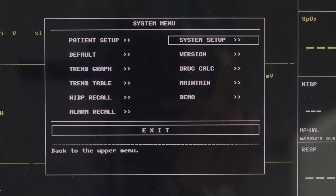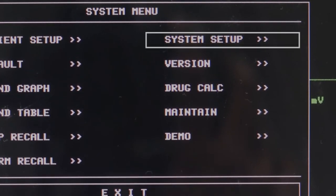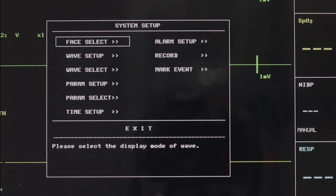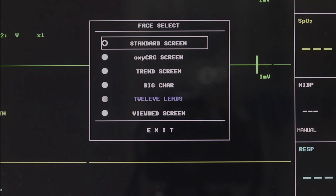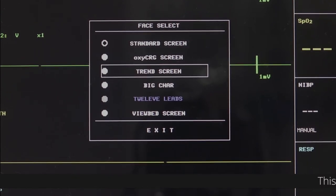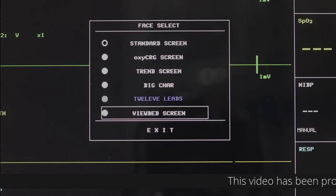System Setup - Face Select: There are five options available. Standard Screen, OxyCRG Screen, Trend Screen, Big Character 12 Leads View, and Bed Screen.